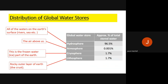For global water stores on Earth, there are four main stores: the hydrosphere (all surface waters — rivers, seas, lakes, ponds), the atmosphere (all air above us), the cryosphere (ice on Earth), and the lithosphere (the rocky outer layer of the Earth's crust). In terms of percentage of total water storage: the hydrosphere is 96.5%, the atmosphere is 0.001%, the cryosphere is around 1.7%, and the lithosphere is also around 1.7%.